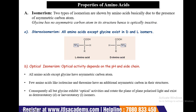Natural proteins of animals and plants generally contain L-amino acids, while D-amino acids occur in bacteria. Regarding optical isomerism, optical activity depends on the pH and the side chain. All amino acids except glycine have an asymmetric carbon atom. A few amino acids like isoleucine and threonine have an additional asymmetric carbon, so they all have optical activity and the ability to rotate plane-polarized light, existing in dextrorotatory or levorotatory isomers.